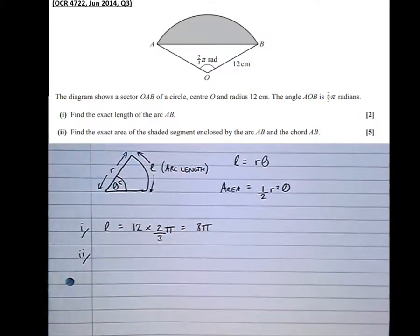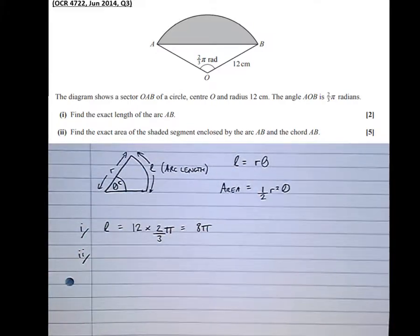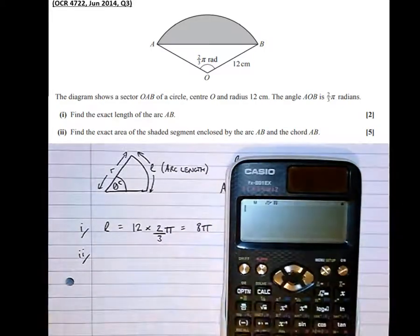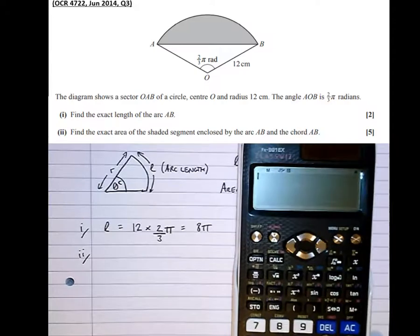Part 2. Find the exact area of this shaded segment enclosed by the arc AB and the chord AB. Now, it's extremely important when looking at questions to do with radians that our calculator is in radians mode. If we're going to be using sine, cos, or tan of an angle, it's really important that this is in radians mode.